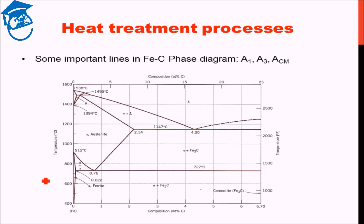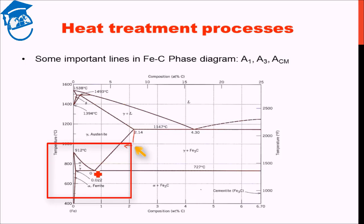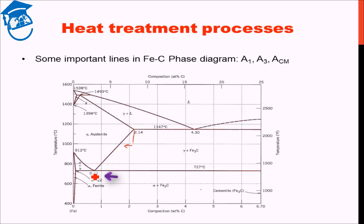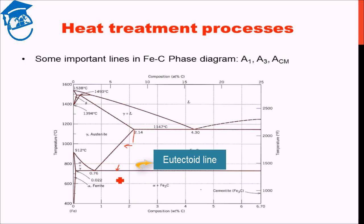Remember that all of the heat treatment processes we'll be discussing are related with steel, that is, less than 2.14 percent carbon. The most important region of concern will be around the eutectoid region. Surrounding the eutectoid point there are three lines. One is the 727 degree Celsius line, which is the eutectoid line, named as the A1 line.